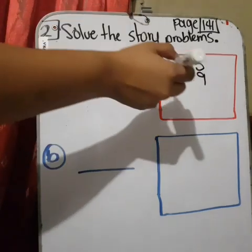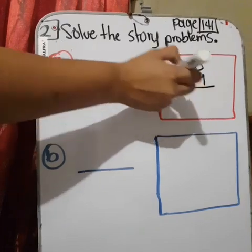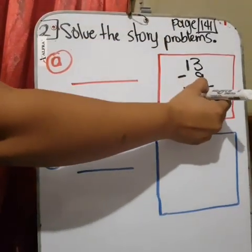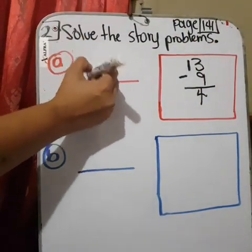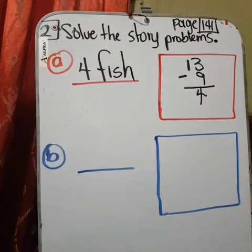And Joshua caught nine fish. How many more fish did Joshua's dad catch that Joshua? What is that? Plus, minus, division, or multiplication? Is subtraction. Thirteen minus nine equals four. Papá capturó cuatro más que Joshua. Four fish.